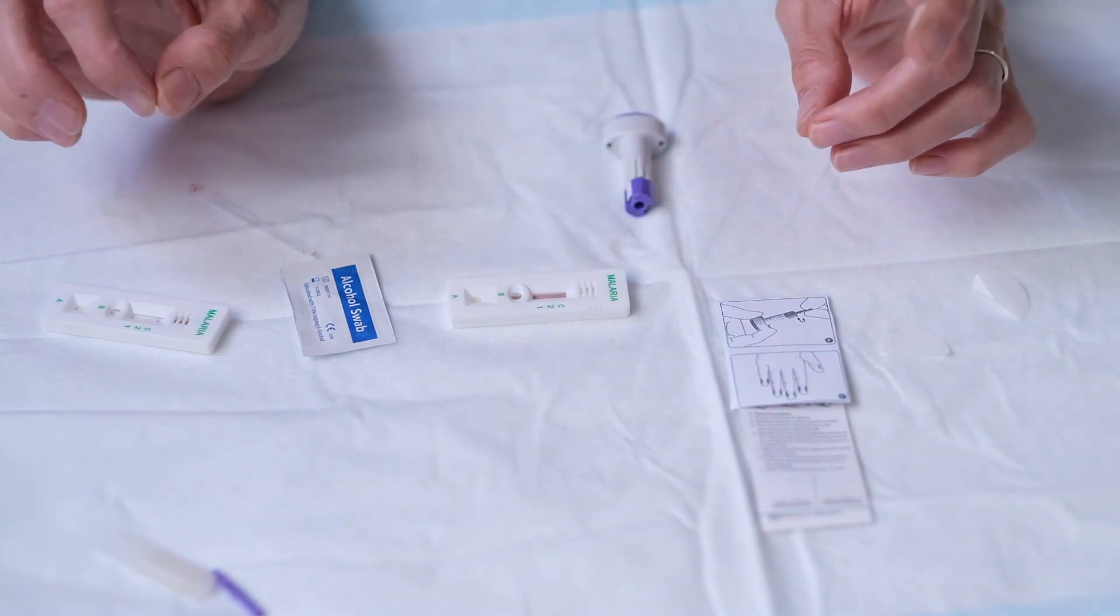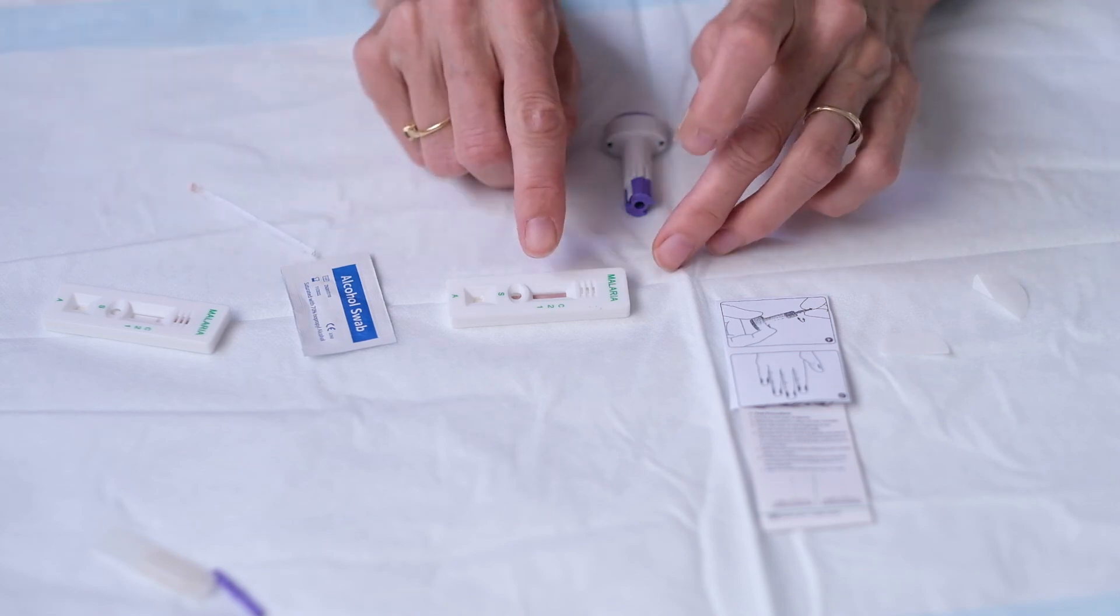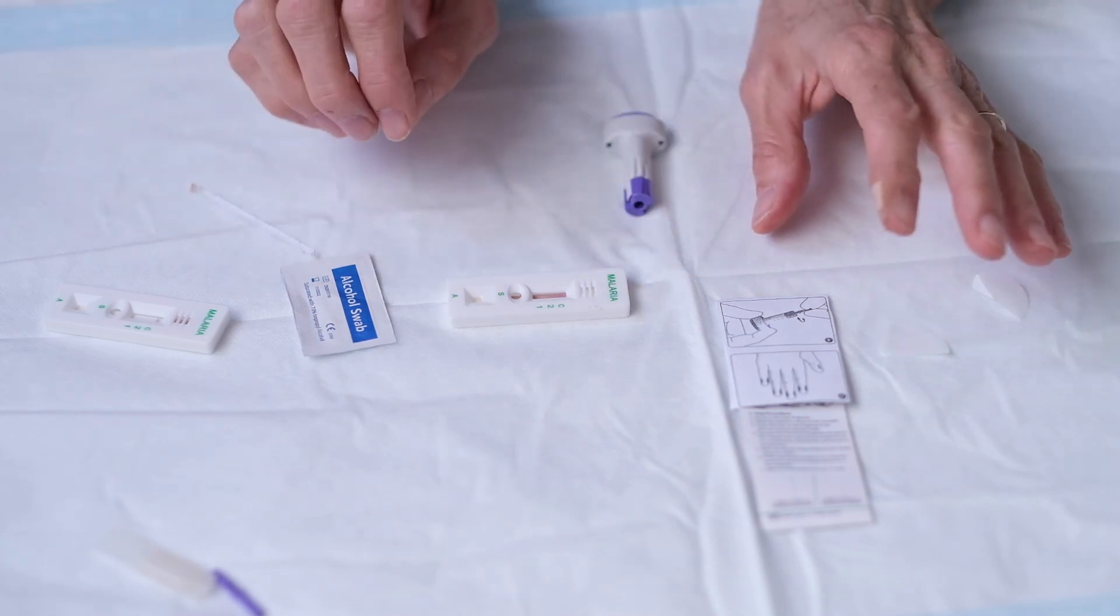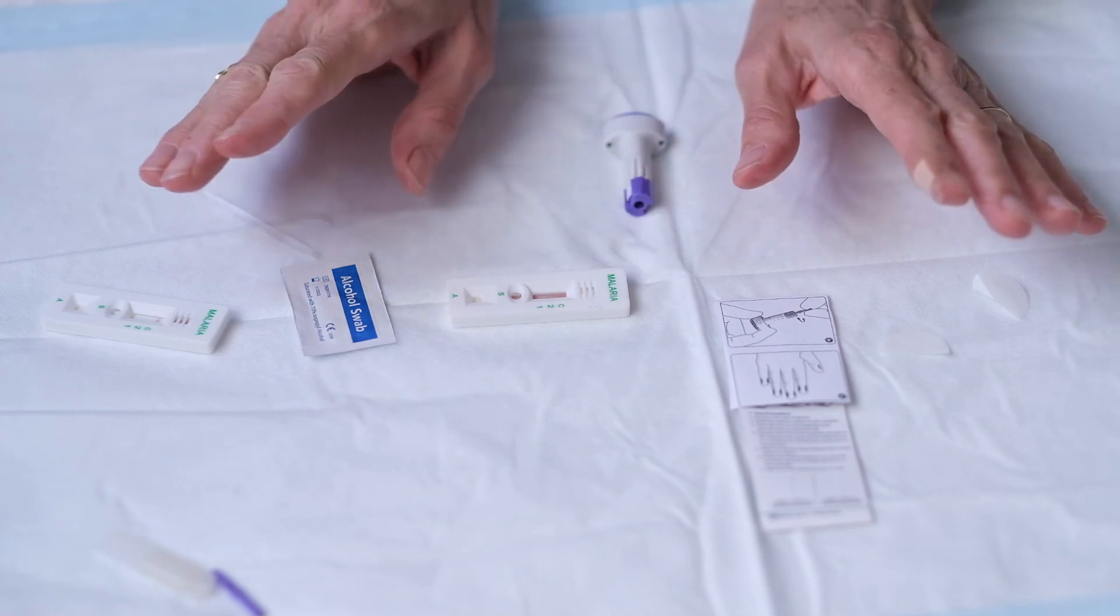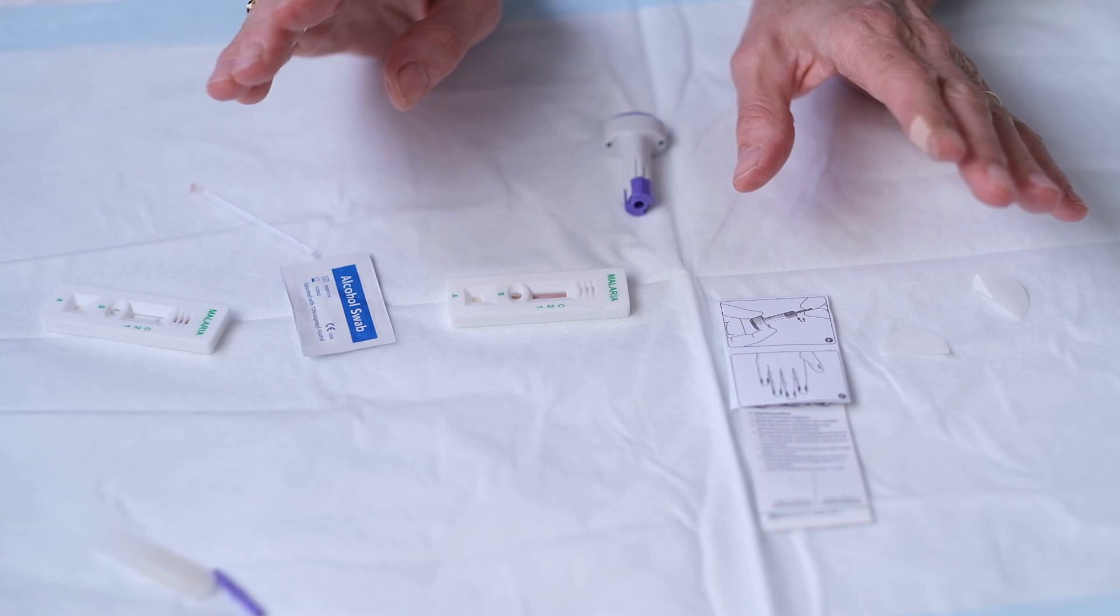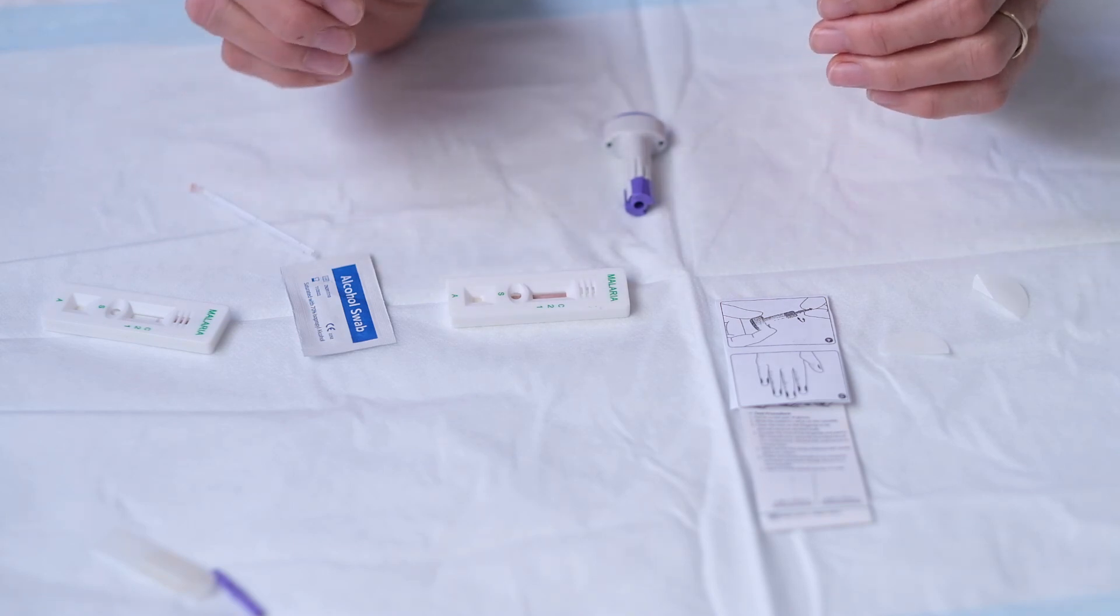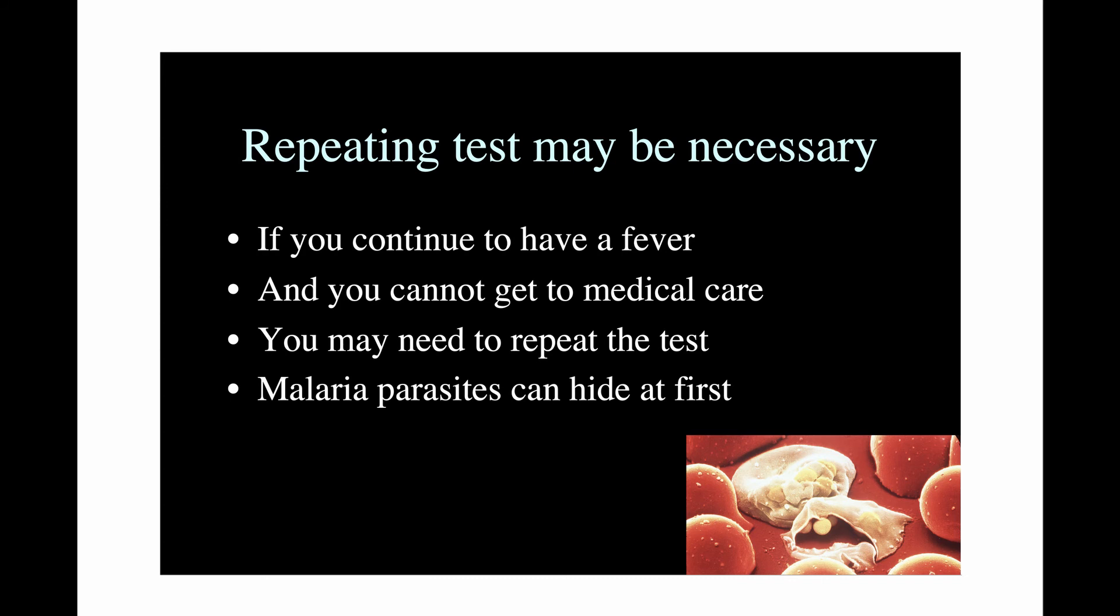Now the thing with this test is if the test is negative and the 1 and 2 bands do not appear and you still remain unwell, it is necessary to repeat the test because sometimes the malaria parasites will hide, they'll attach to the walls of the blood vessels and you will not get a positive result. So if you continue to be feverish and unwell you may need to do a second test.